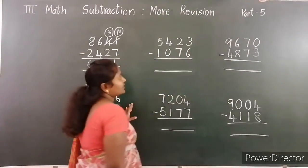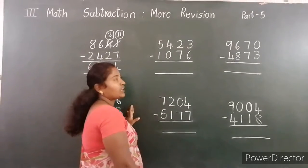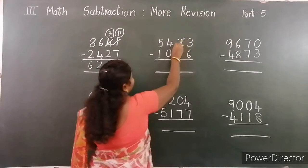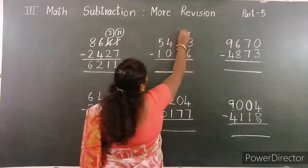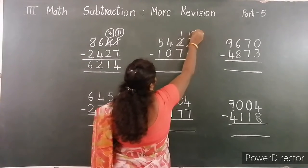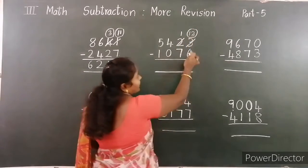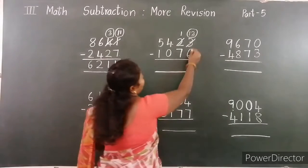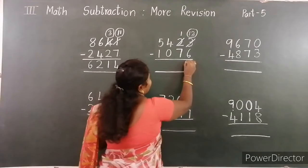Here 3. 3 minus 6 — 3 is smaller than 6, so borrow from the next place. Here 1 left, now 13. Now subtract: 13 minus 6 — the difference is 7.